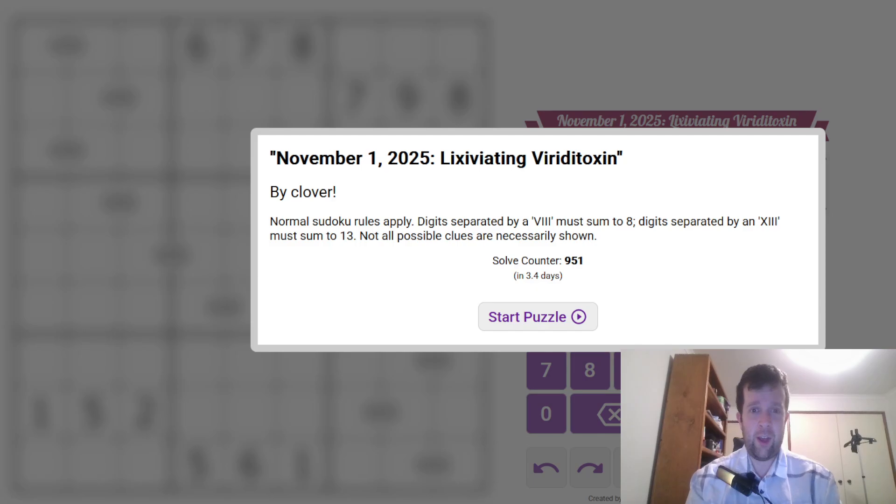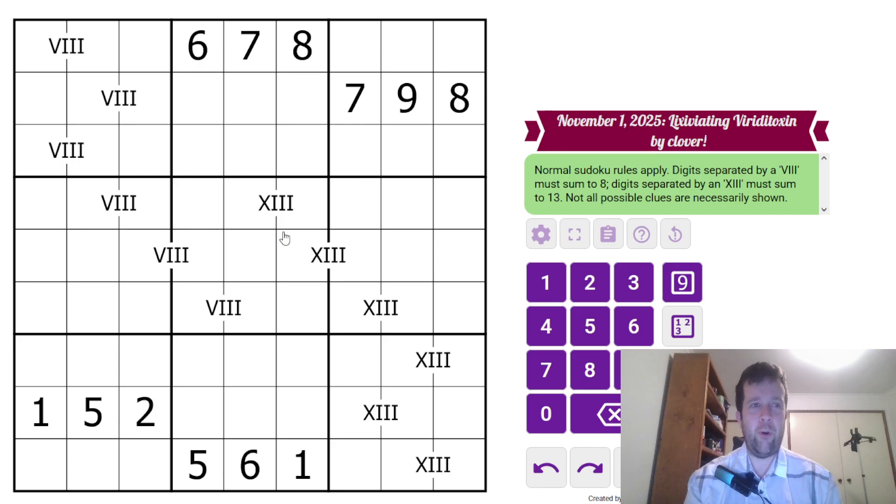Now, this is another one in Clover's crazy, not quite Roman numeral sequence of puzzles. So what is this? All Sudoku rules apply. Each box, each row, and each column must contain the digits one through nine once each. Now, we have some bonus clues in the grid. Cells separated by VIII must sum to eight, and cells separated by XIII... Me and the girlfriend have been marathoning Avatar The Last Airbender, and we're up to Ba Sing Se, and Clancy Brown's voice just made me think that I'm Mr. Krabs for two seconds. My apologies.